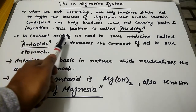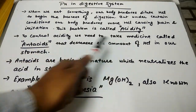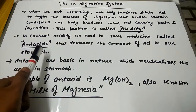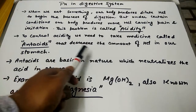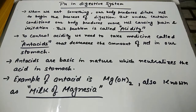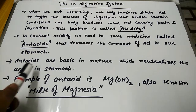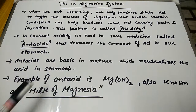To control acidity, we need to take medicine called antacids. Antacids are those which control acidity by decreasing the amount of HCl in our stomach. Antacids are basic in nature, which neutralizes the acid in the stomach.